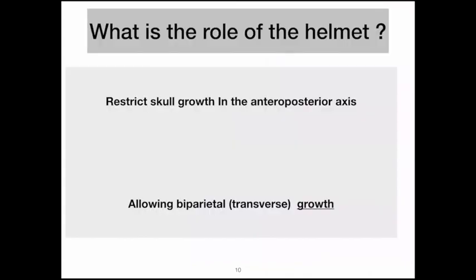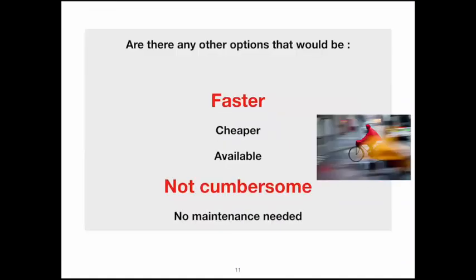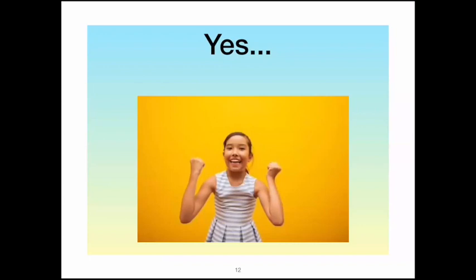What is the role of the helmet? It acts to restrict the elongated skull from growing in the antero-posterior axis and gives enough room on either side to allow the skull to enlarge transversely — restriction on one side and expansion on the other. We all agree the helmet is helpful and successful, but it takes a long time and is very expensive. So, can there be another alternative — faster, cheaper, available, not cumbersome, and requiring no maintenance visits? It seems there is an alternative, and this is what I'm going to present.